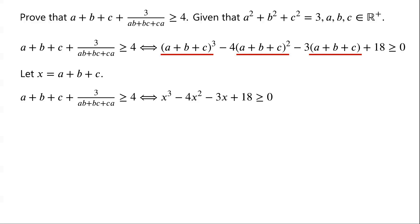We notice that when x = −2, the cubic expression equals (−2)³ − 4(−2)² − 3(−2) + 18 = 0. So the cubic algebraic expression must have a factor (x + 2). Next, we will factorize the cubic algebraic expression.